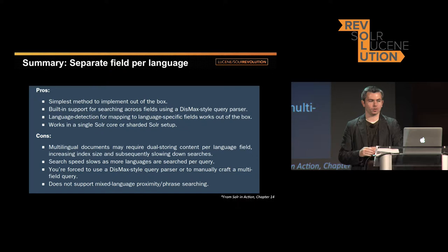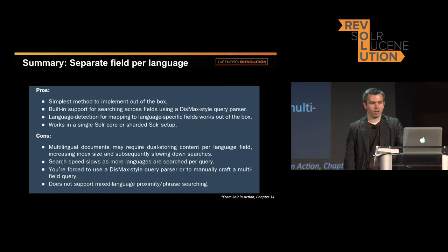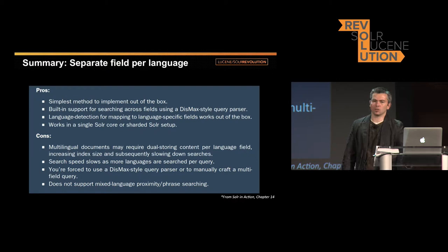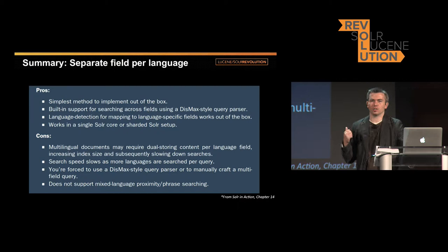The advantages of separate field per language: it's the simplest method, requires only basic configuration, has built-in support via eDismax for searching across fields, and language detection works out of the box. The disadvantage: if you have many languages, your query becomes very long and slow because you're doing an OR query across many fields on every search — you'll hit scale issues if supporting dozens or hundreds of languages. Also, if you have actual mixed-language content in the same field, cross-language phrase searching is very difficult.